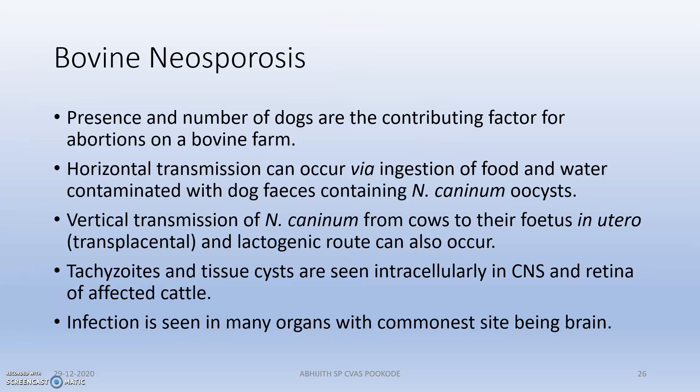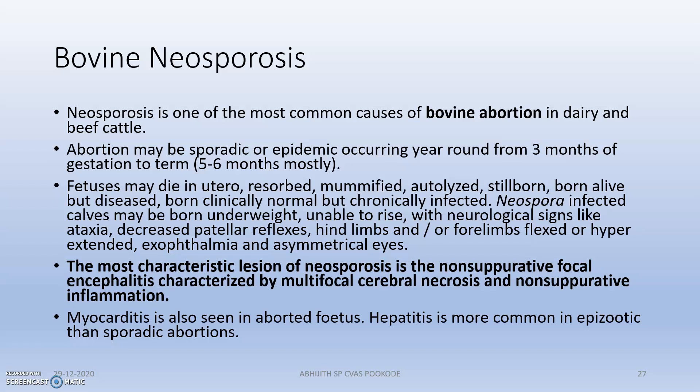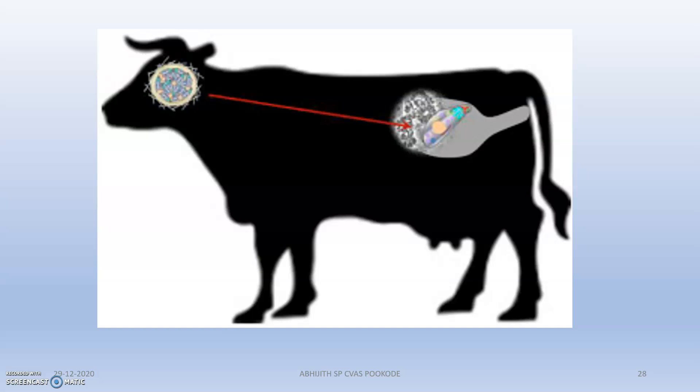Bovine neosporosis is a serious disease with prominent vertical transmission. Tachyzoites and tissue cysts are seen intracellularly in the CNS and retina. Abortion is very common and it is the most common cause of bovine abortion in dairy and beef cattle farms. The most characteristic lesion is non-suppurative focal encephalitis, characterized by multifocal cerebral necrosis and non-suppurative inflammation. Myocarditis is also seen in the aborted fetus and hepatitis is common.